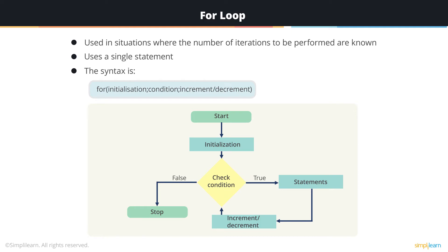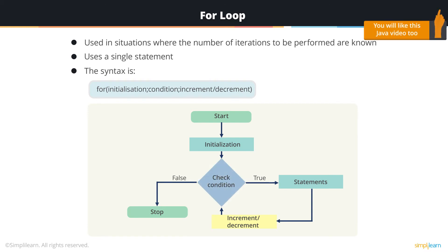The second component is Condition. As an entry-controlled loop, the condition is checked when entering the loop. The response obtained is a boolean value, and it also tests the exit condition of the loop. The third component is Increment or Decrement — in the course of the loop's execution, the variable needs to be incremented or decremented for its next iteration.